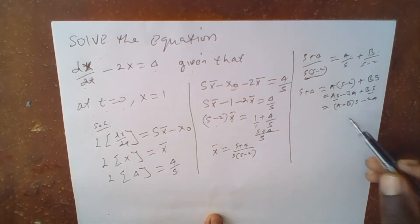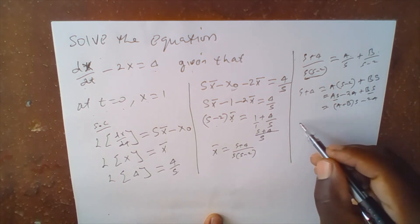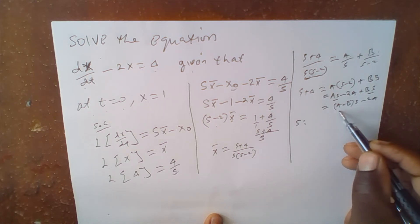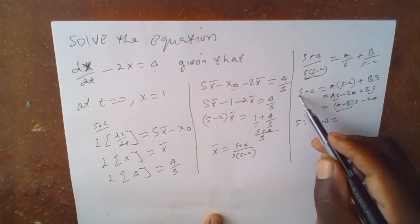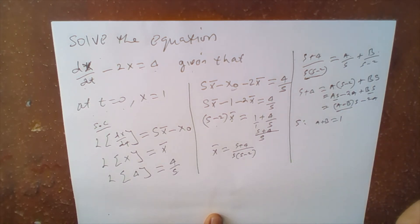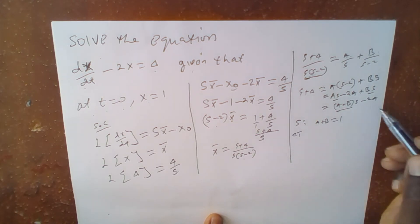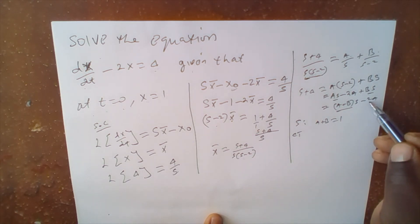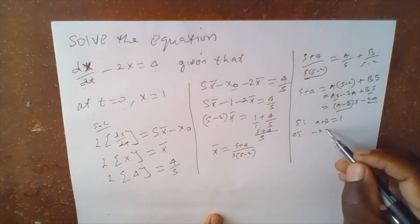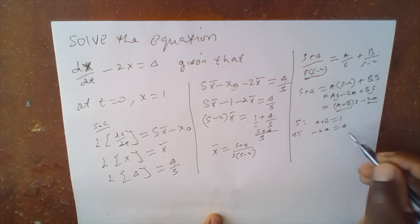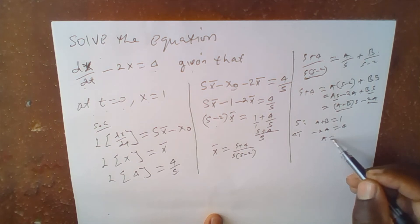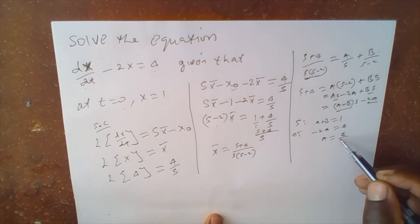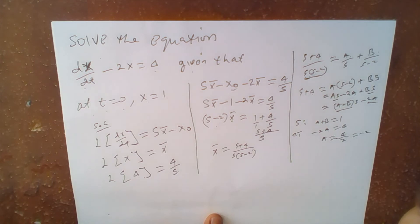We equate corresponding coefficients. The coefficient of s gives: A plus B equals 1. Equating the constant terms: minus 2A equals 4, so A equals 4 over negative 2, which equals negative 2.